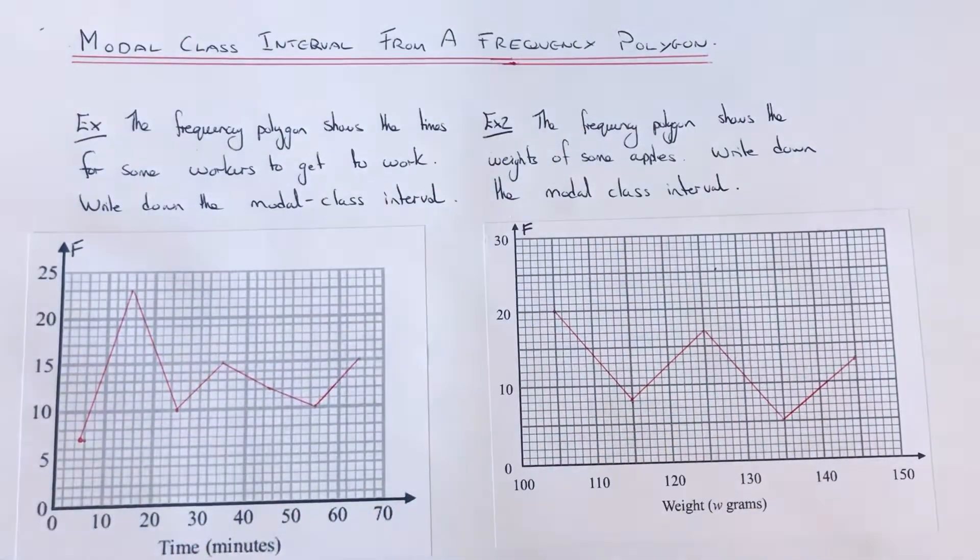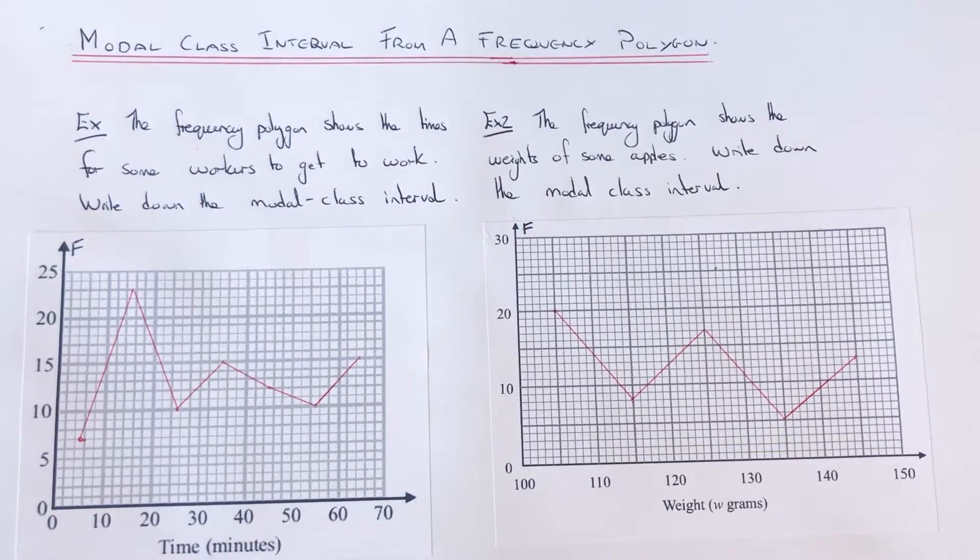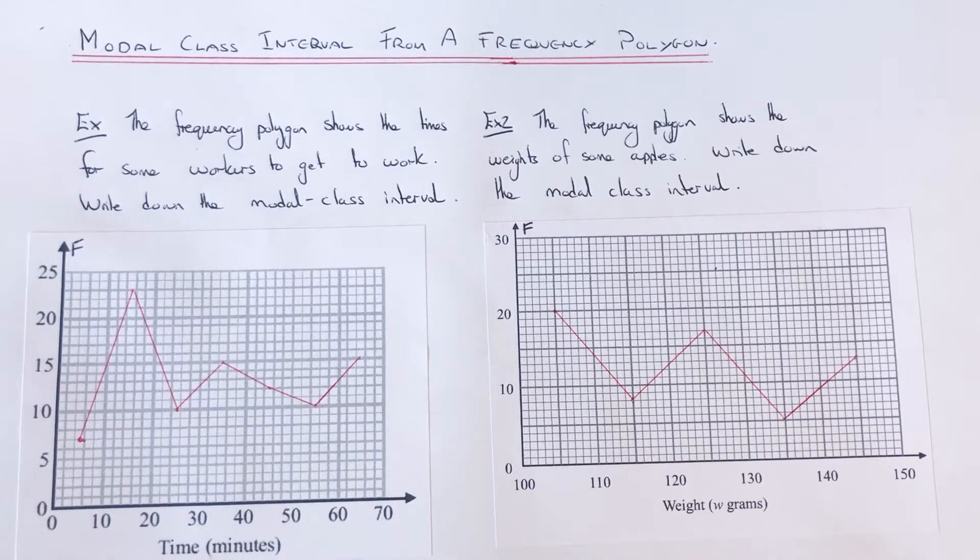Hi guys, welcome back. This is Maths 3000. Today I'm going to show you how to write down the modal class interval from a frequency polygon. To do this, we just need to look for the group which has the highest frequency.